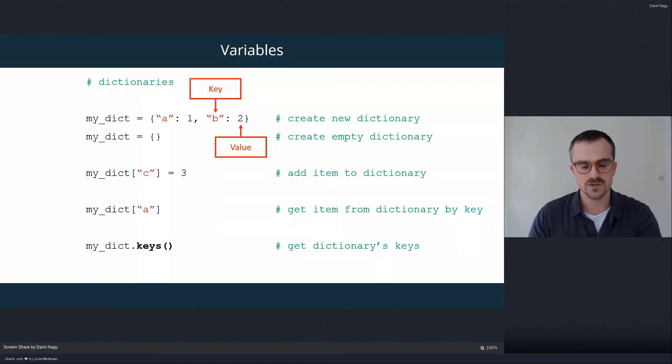So after running this line of code, our dictionary will now contain three keys, A, B, and C tied to three different values, one, two, and three.